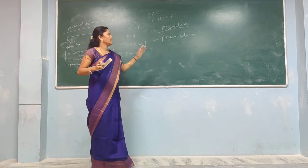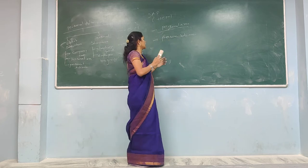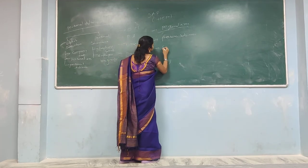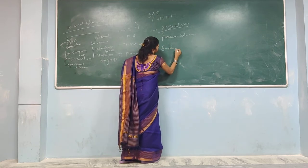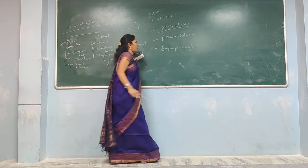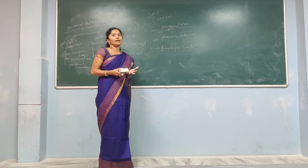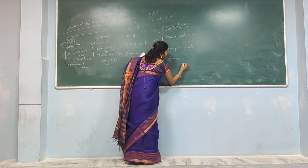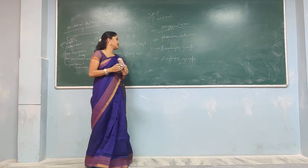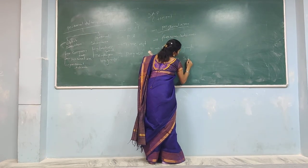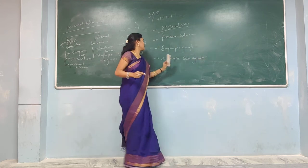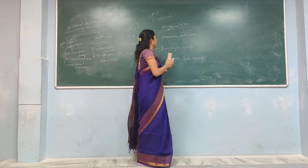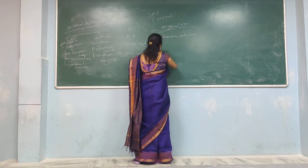Personal sub-area is nothing but the subset of personal area, also dealing with the geographical location of the company. Coming to personal structure, it is mainly classified into employee group and employee subgroup. Employee group covers different types of employees like salaried employees, wage employees, and contract-based employees. Employee subgroup deals with employees like managers, executives, and salesmen in an organization.